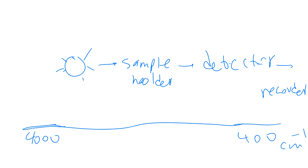The sample holder for IR takes a very small sample. Traditionally, samples were mixed with KBr or NaCl pellets and pressed into thin layers under high pressure. Newer sample holders have two pieces of diamond — you place a small sample and screw the top, compressing it into a very thin layer through which the light shines.